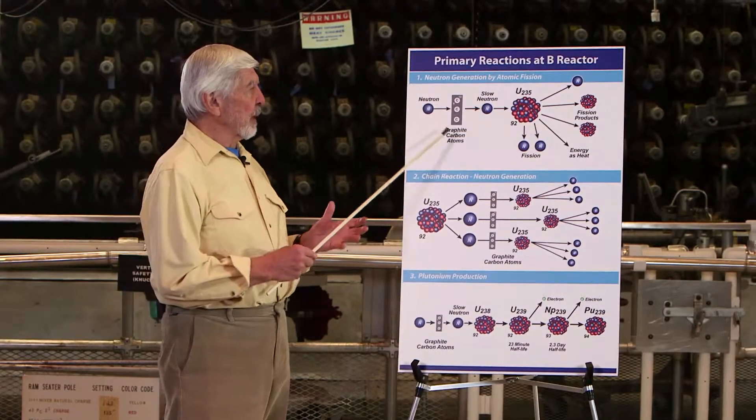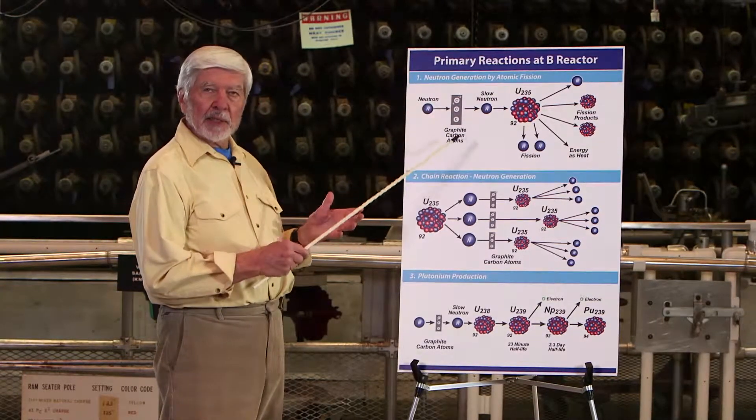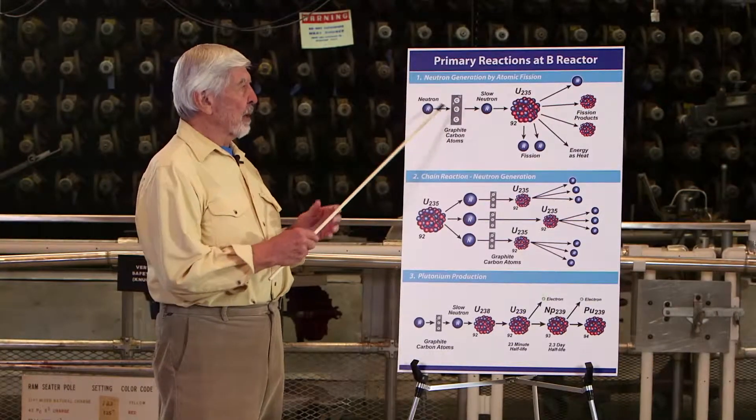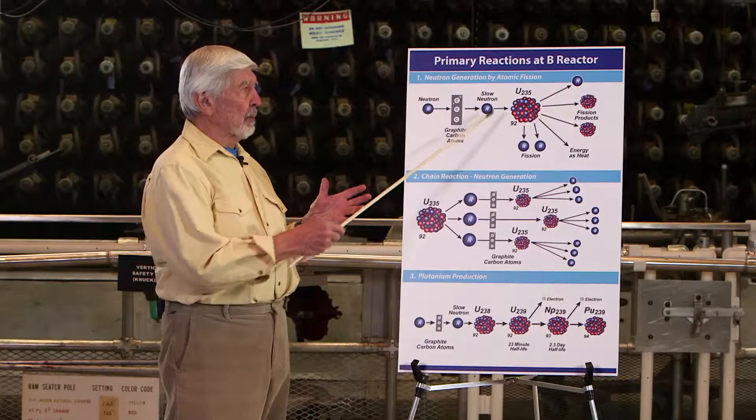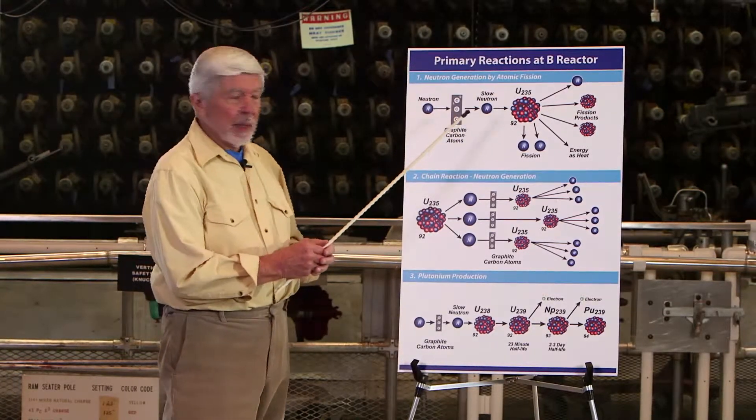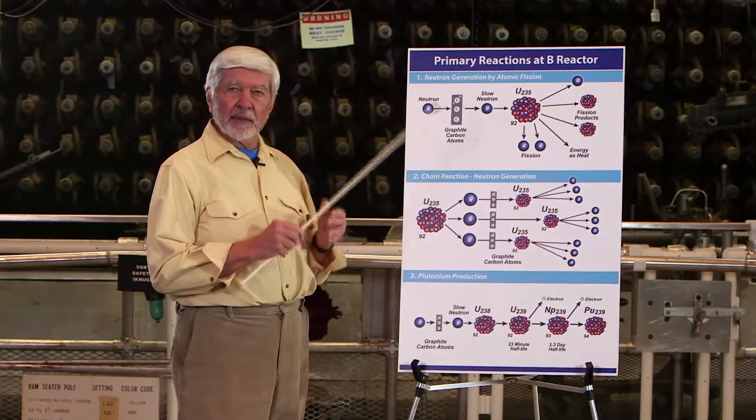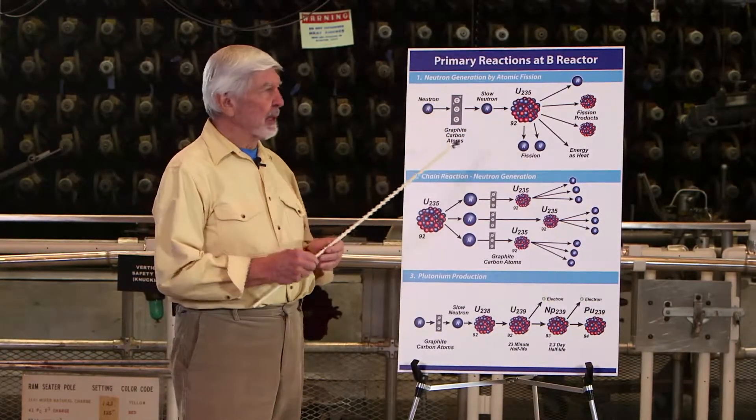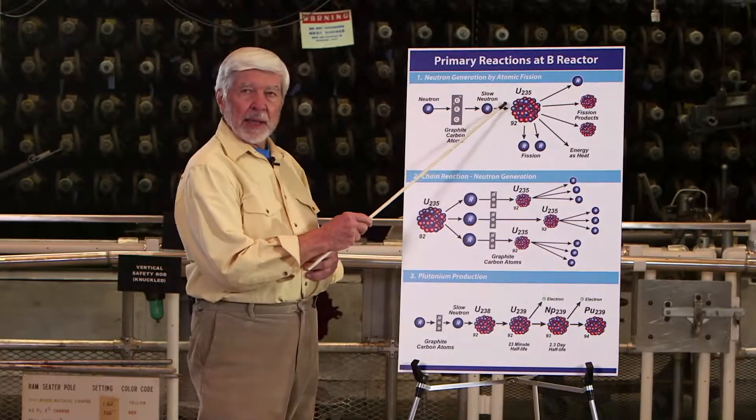Early experiments determined that if you slow down a neutron by bouncing it off of light atoms, you could produce a slow neutron, and a slow neutron would be accepted by the uranium-235 isotope. Uranium-235 is less than 1% of natural uranium, 0.7%, but it's the magic atom.